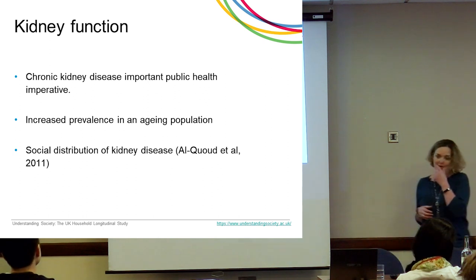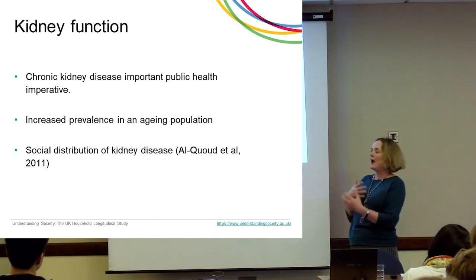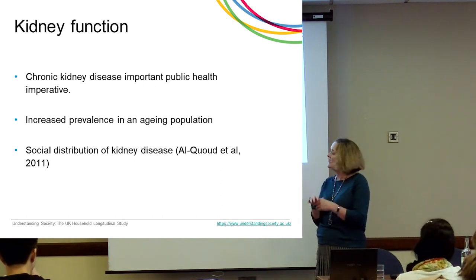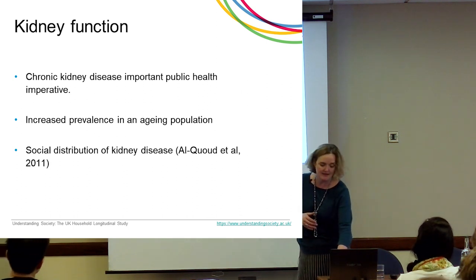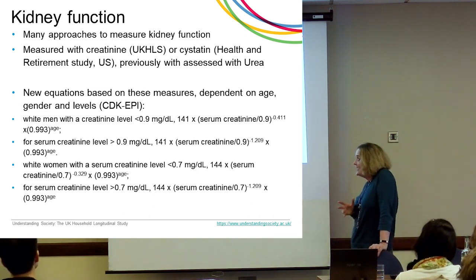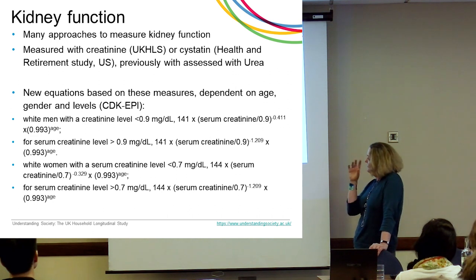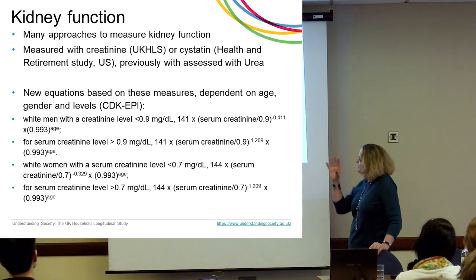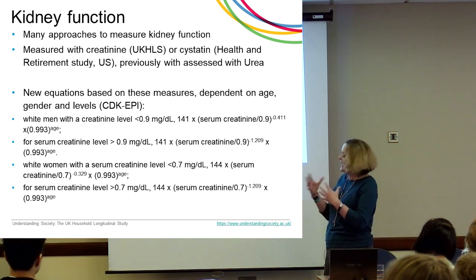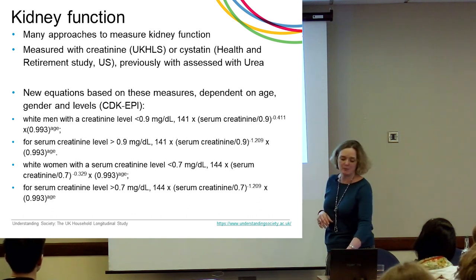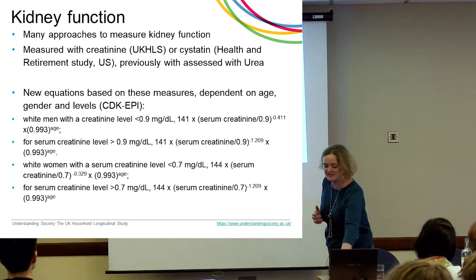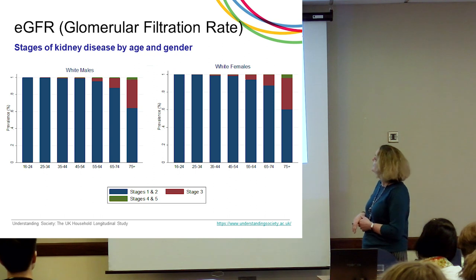For kidney disease, there are international standard formulae that take the blood marker data and apply different levels for different age groups, ethnic groups, and genders to get a measure indicating whether people have kidney disease. All of this is available in the glossary. As you'd expect, high levels of kidney disease increase with age.